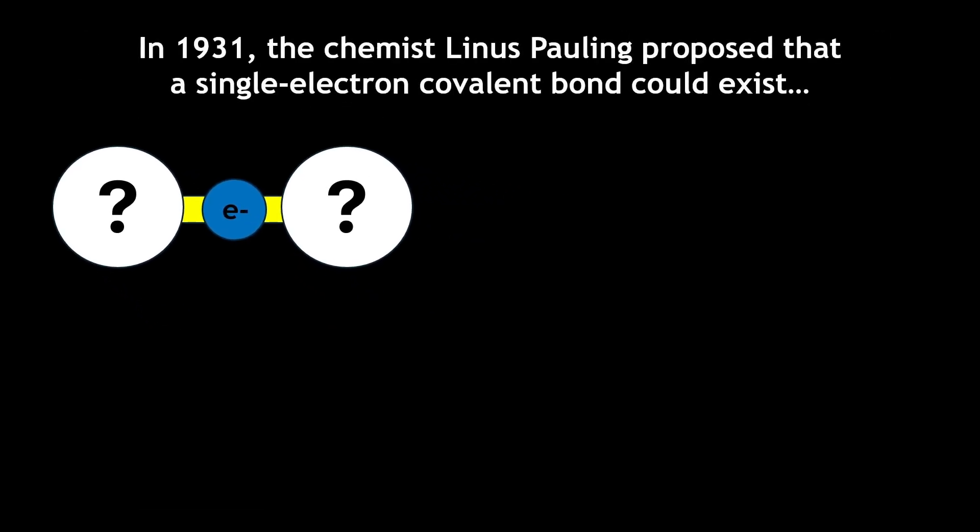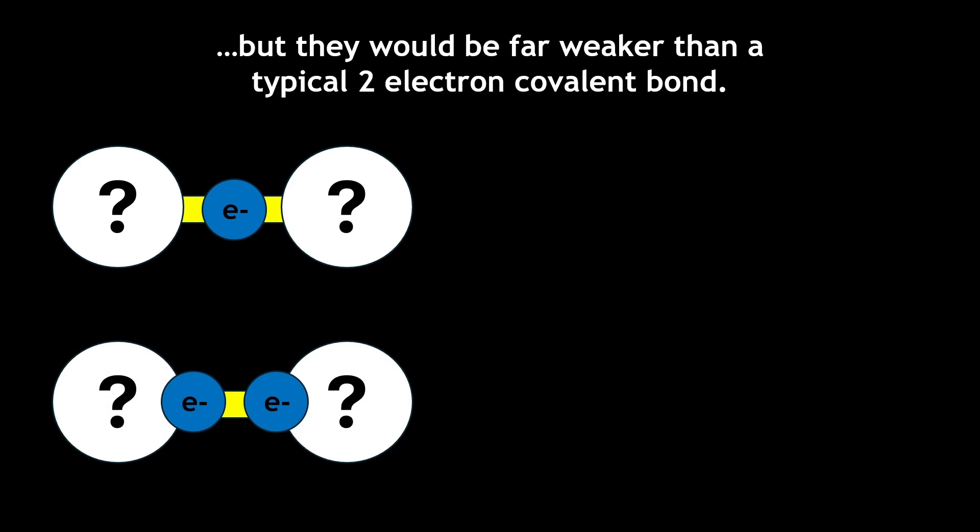In 1931, the chemist Linus Pauling proposed that a single electron covalent bond could exist, but they would be far weaker than a typical two-electron covalent bond.